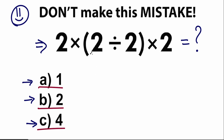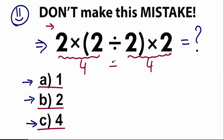A lot of students might say, okay, let's go in strict order from left to right. Maybe we write 2 times 2 first, which equals 4. We have 2 times 2 on the right side equal to 4. So with the division in the middle, maybe 4 divided by 4 equals 1. A lot of students solve it like that — they say we need to go left to right because of order of operations. I'm not going to say right now if that's correct or incorrect.